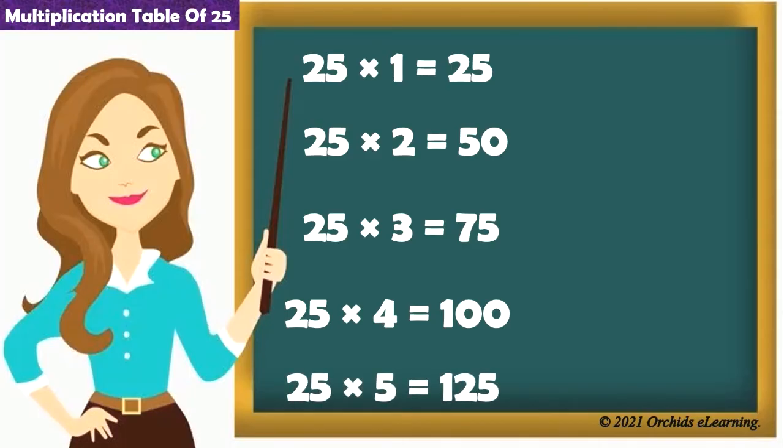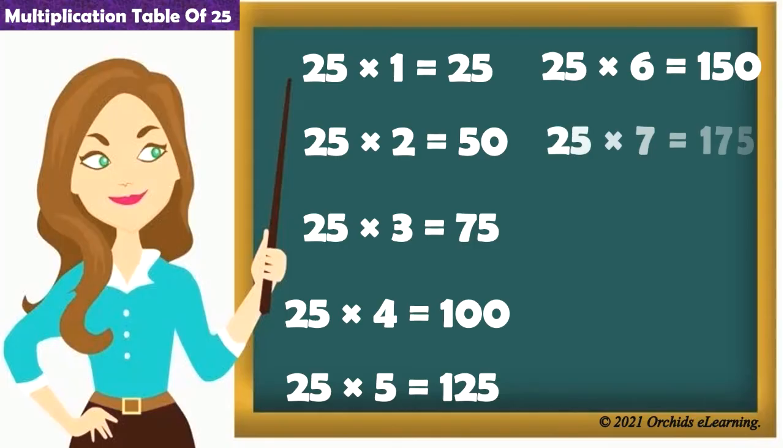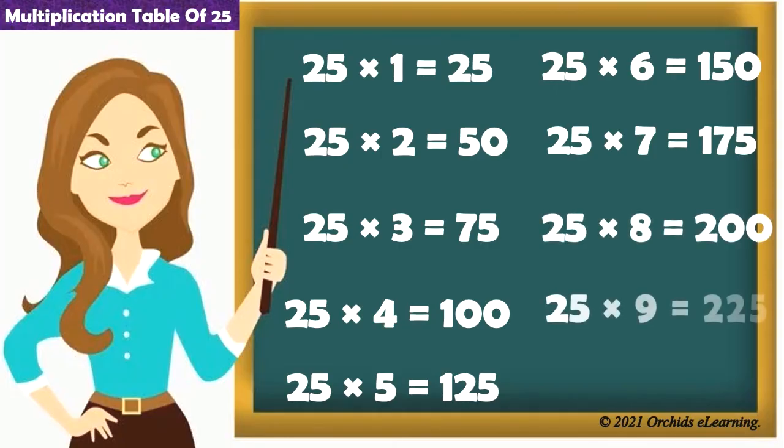25 6s are 150. 25 7s are 175. 25 8s are 200. 25 9s are 225. 25 10s are 250.